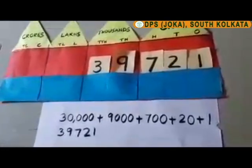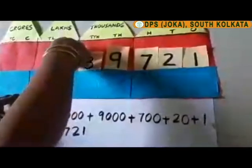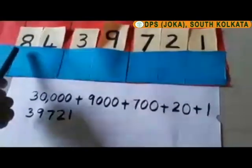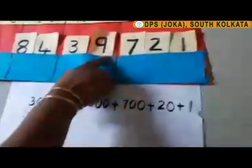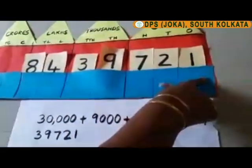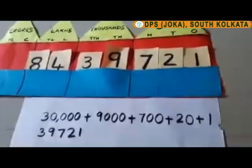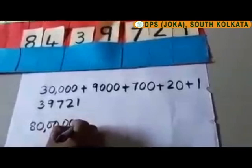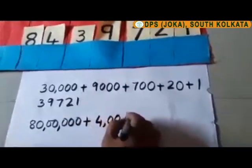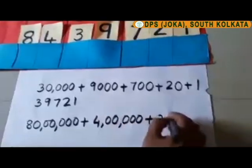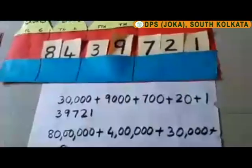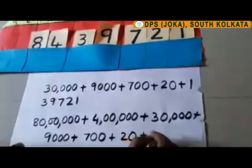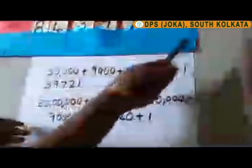We can have different numbers. For example, suppose we put 4 in the place of lakhs and 8 in the place of 10 lakhs. So how do we read this number now? We read it as 84,39,721. And how do we expand it? Since 8 is in the 10 lakh place, we write 80,00,000. Plus 4,00,000. Plus 9,000. Plus 700. Plus 20. Plus 1.